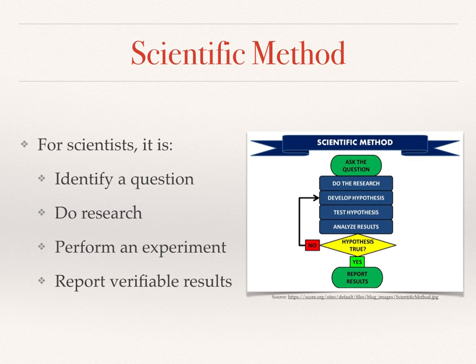While journalism is not exactly a science, journalists can learn a lot from scientists. For example, when researching a problem, scientists follow four basic steps known as the scientific method. These steps help scientists thoroughly investigate the problem.